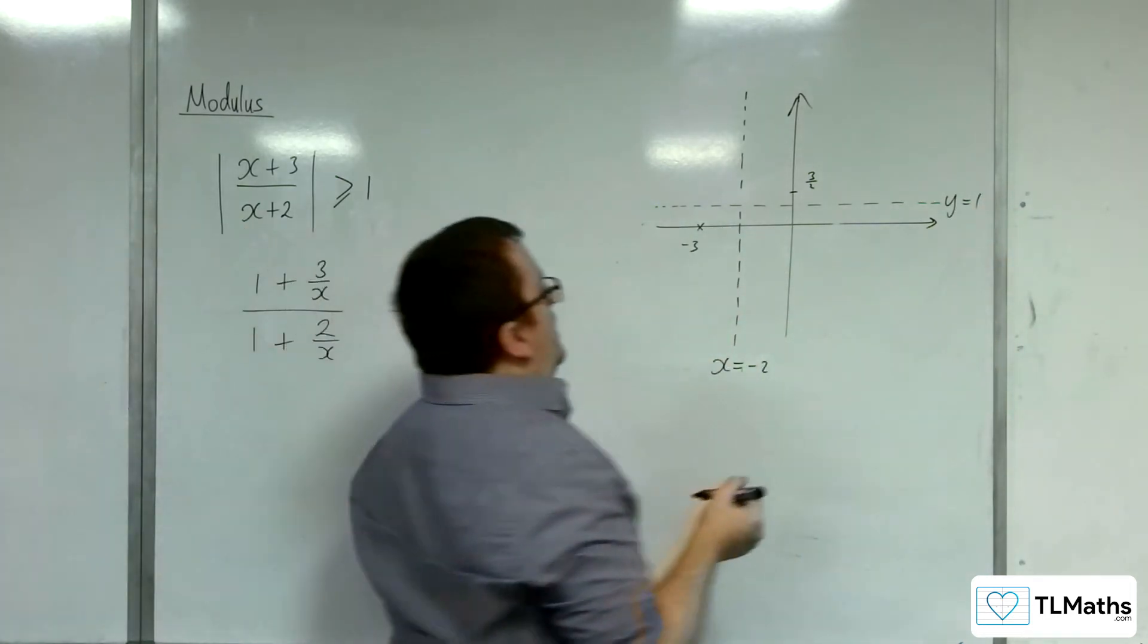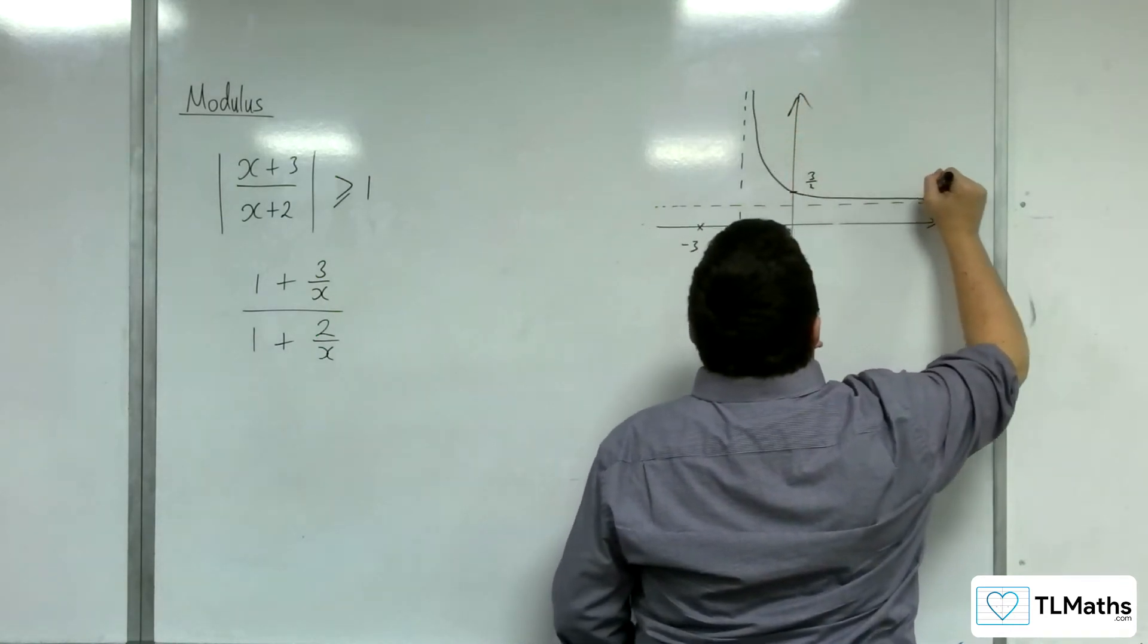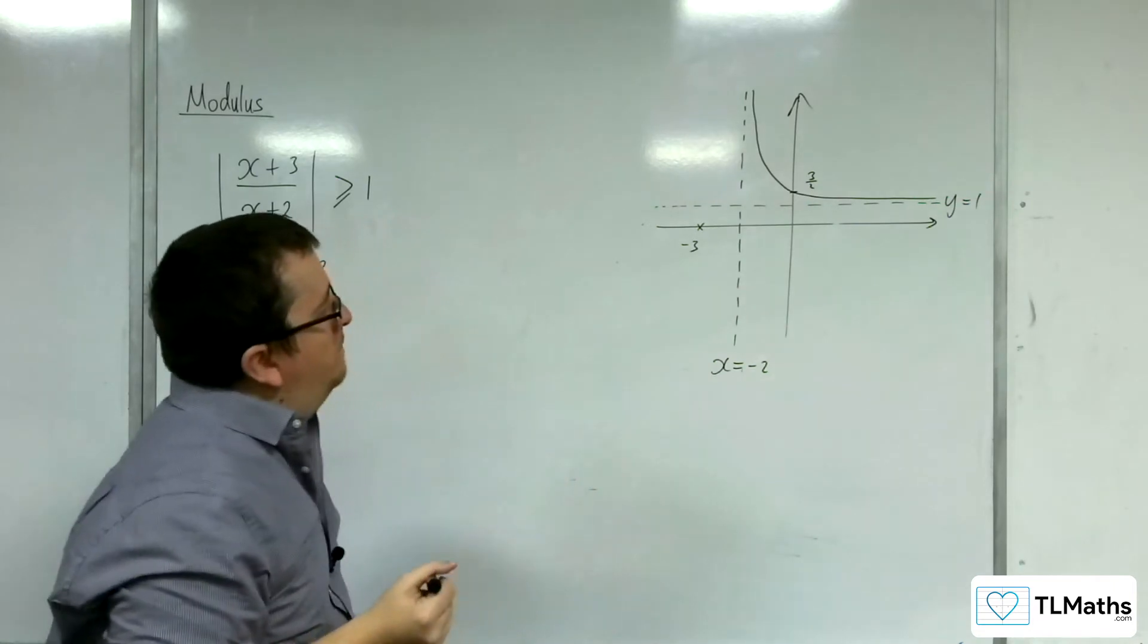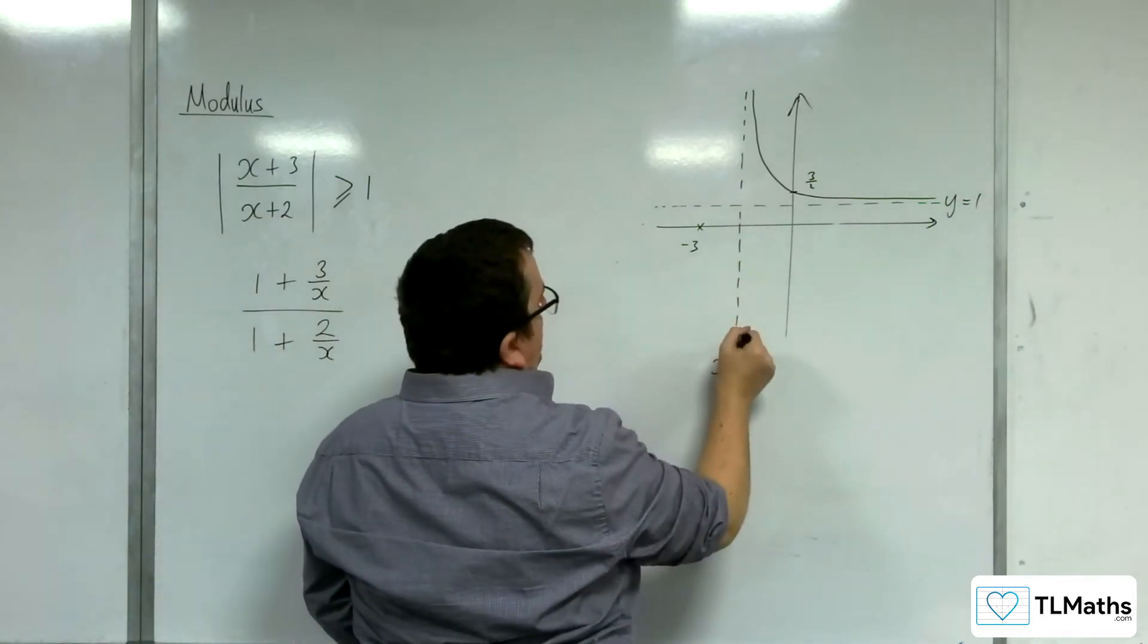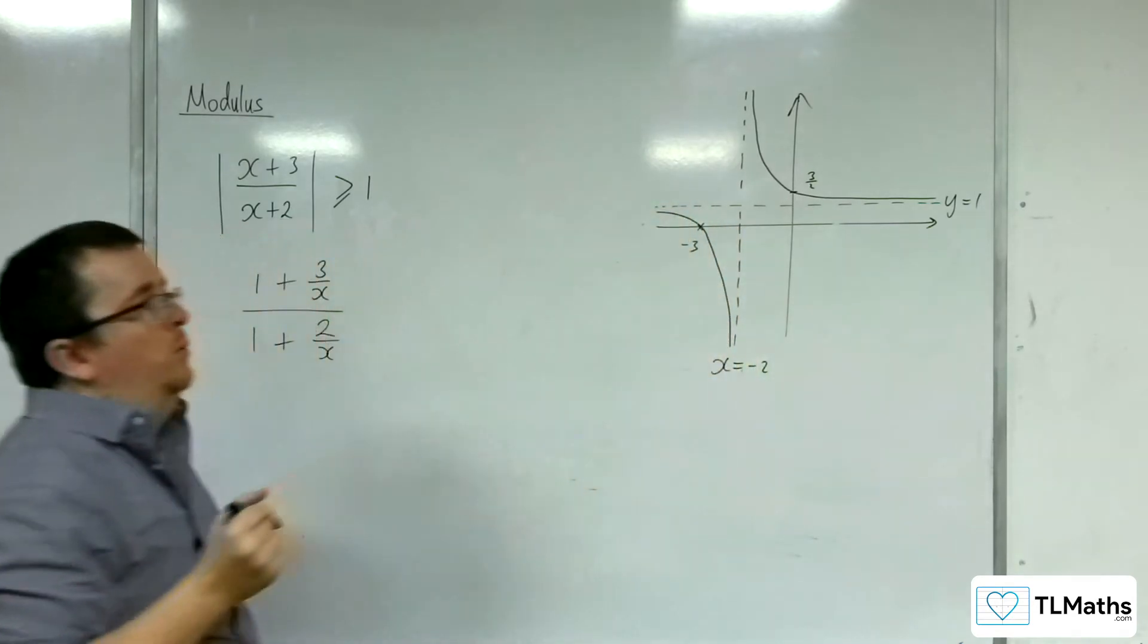So the curve must come down through that point and then tend to y equals 1 that way. And the other part of the curve is going to be coming up through minus 3 and then tending towards y equals 1 that way.